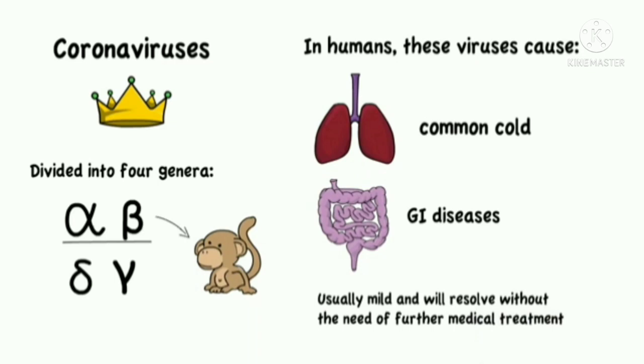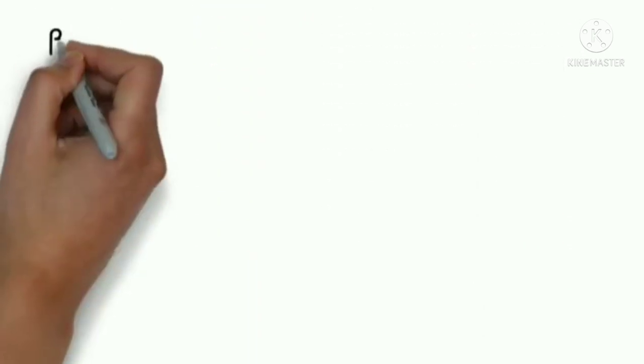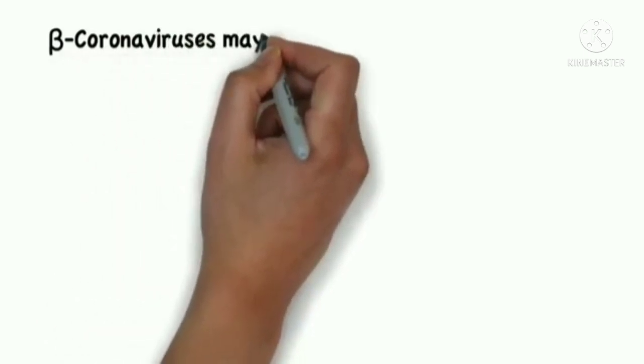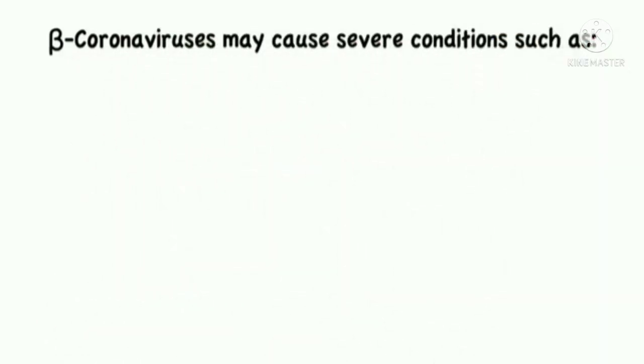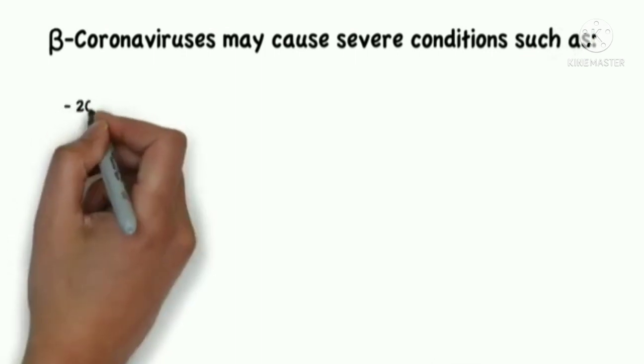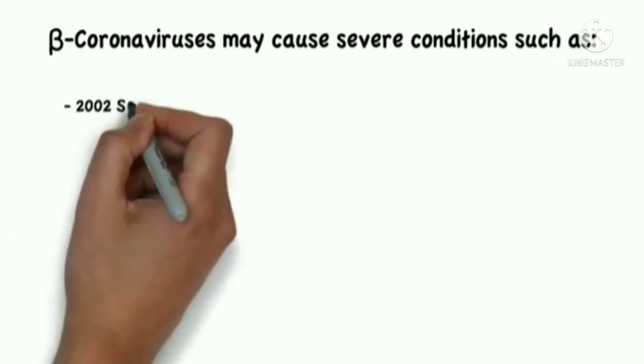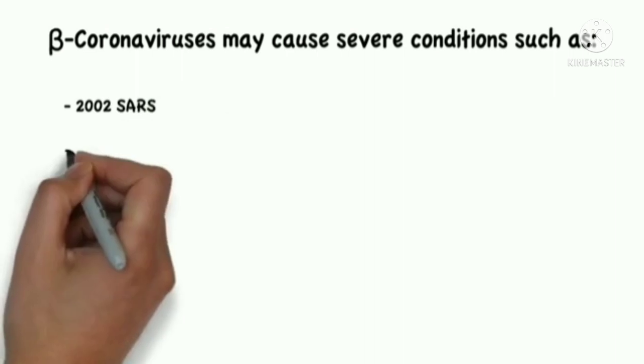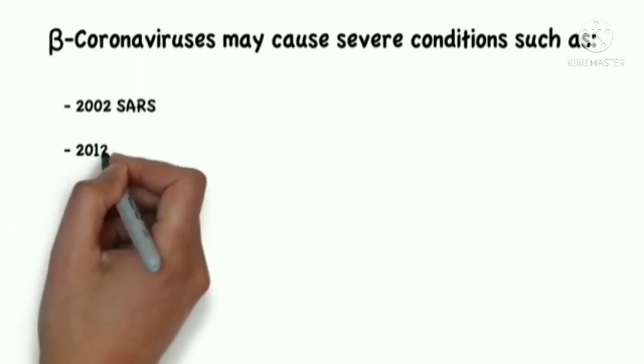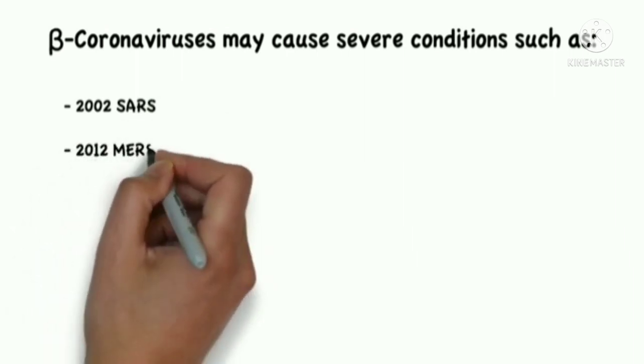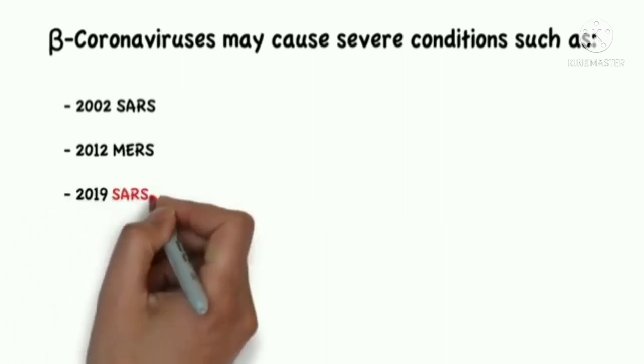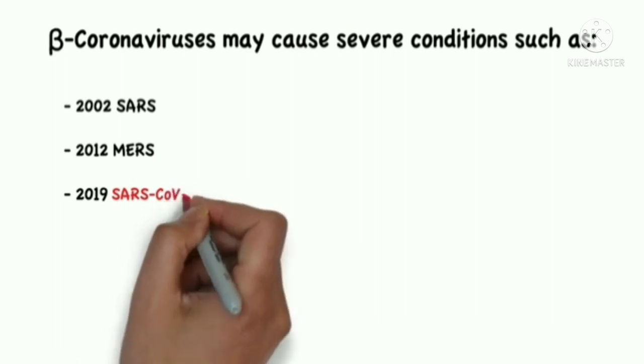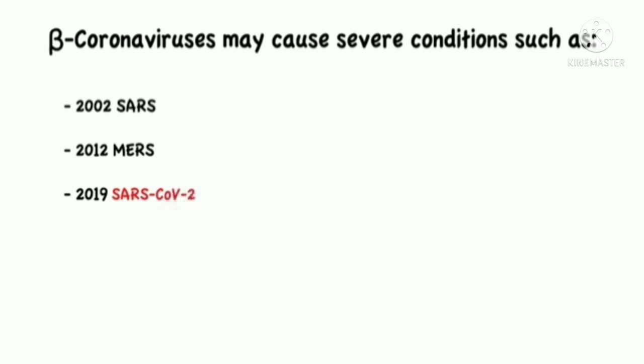However, some of these viruses, namely beta coronaviruses, may cause severe conditions, such as the 2002 Severe Acute Respiratory Syndrome Coronavirus, the 2012 Middle East Respiratory Syndrome Coronavirus, and now the Severe Acute Respiratory Syndrome Coronavirus 2, responsible for COVID-19.